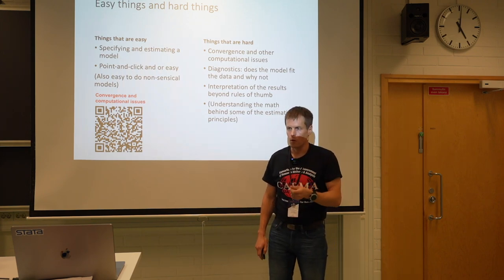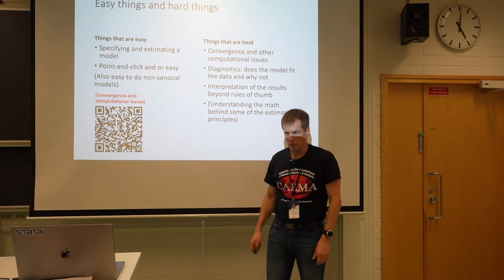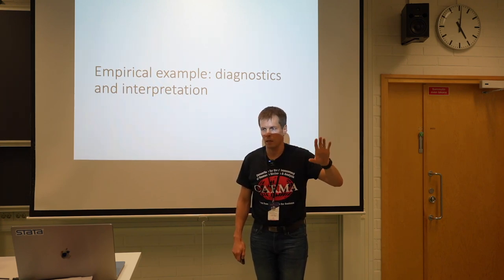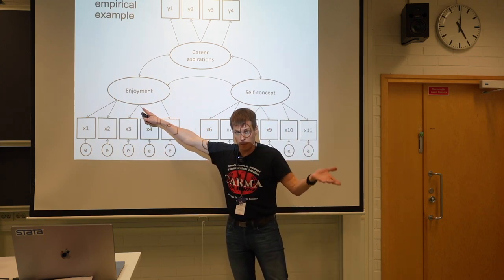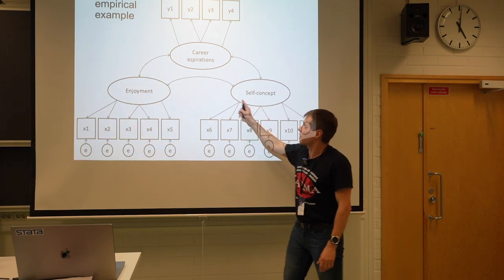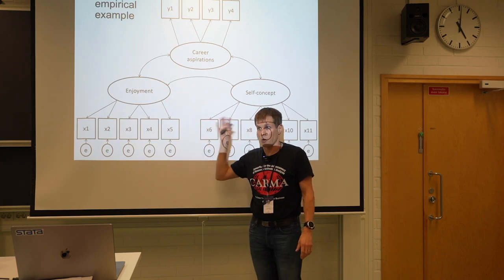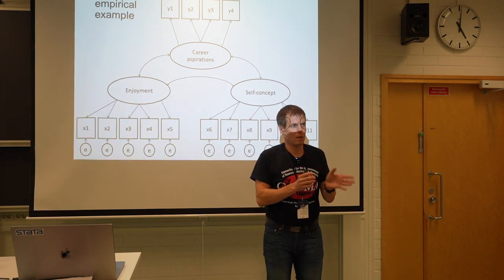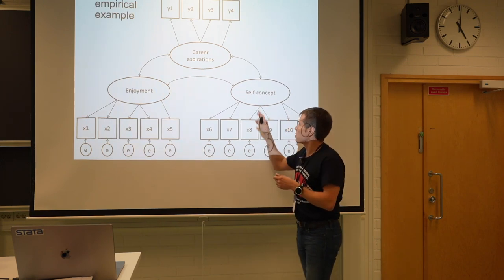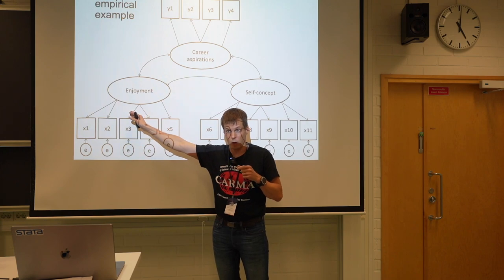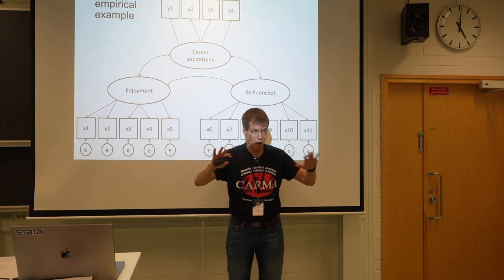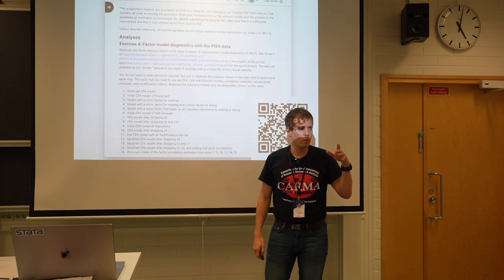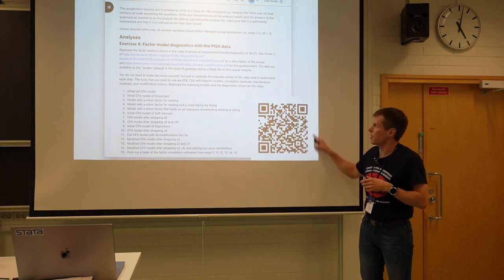Now the second part: my workflow and how I do diagnostics using real data. My empirical example uses the PISA dataset. I have three things measured: enjoyment of science, self-concept about studying science, and career aspirations. These data have been used in a number of methodological articles to demonstrate features of structural regression models. The idea is to test competing hypotheses — whether it's a person's self-concept or enjoyment that determines their science career aspirations.